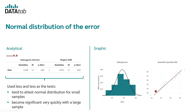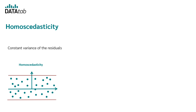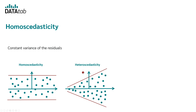Another assumption for linear regression is that the residuals must have constant variance — homoscedasticity. Since your regression model never exactly predicts your dependent variable in practice, you always have a certain error. You can plot the dependent variable on the x-axis and the error on the y-axis; the error should scatter evenly over the whole range. If it does, homoscedasticity is present. However, if the errors show a funnel-shaped pattern, then we have heteroscedasticity — different error variances depending on the value range of the dependent variable — which should not be the case.